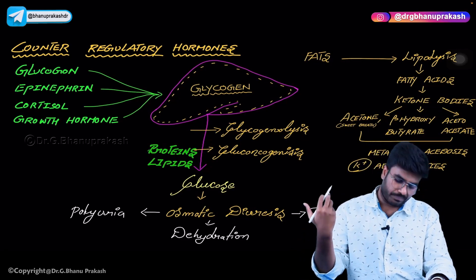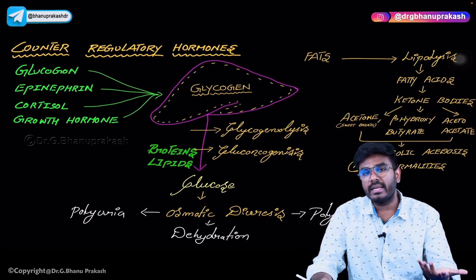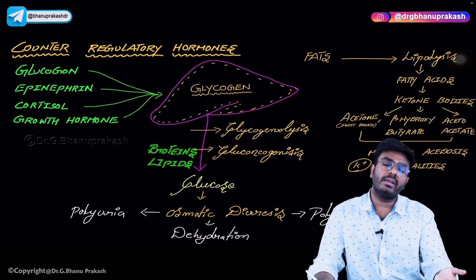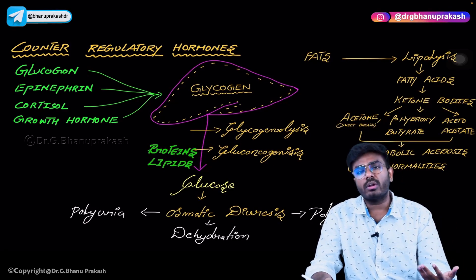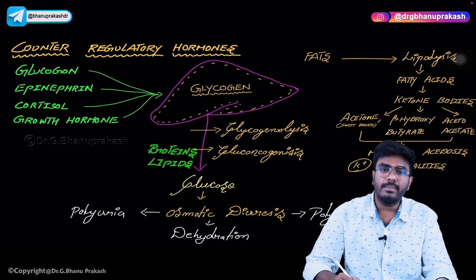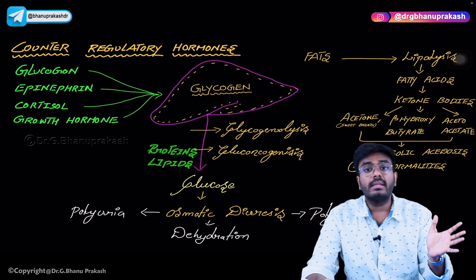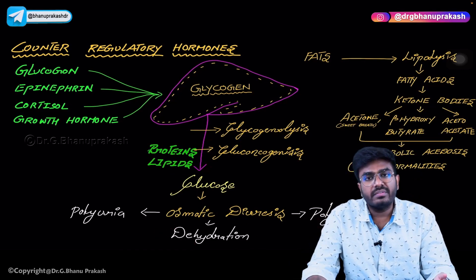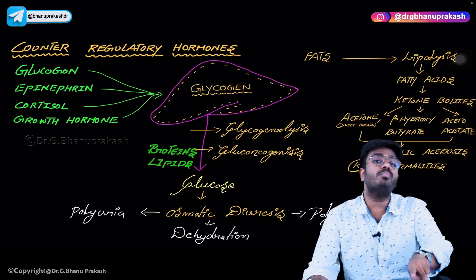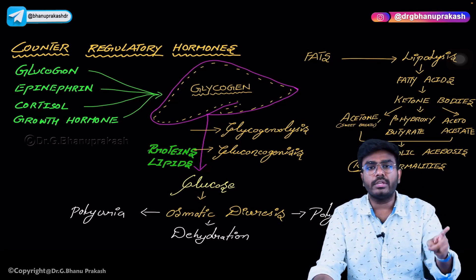Glucose drags water along with it, causing osmotic diuresis. Because of this osmotic diuresis, we see polyuria in a patient with diabetic ketoacidosis — because of glucosuria and osmotic diuresis. Whenever the patient is losing so much body fluid in the form of urine, he will have excessive thirst — polydipsia. And whenever lots of volume depletion is happening, that causes dehydration. So a patient with diabetic ketoacidosis suffers from dehydration, polydipsia, and polyuria.